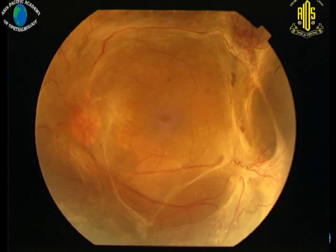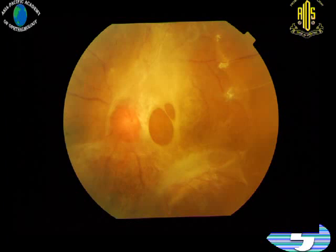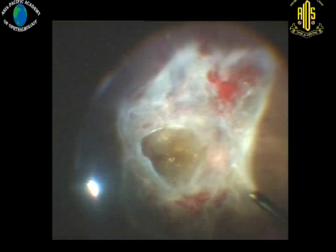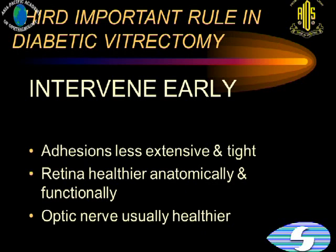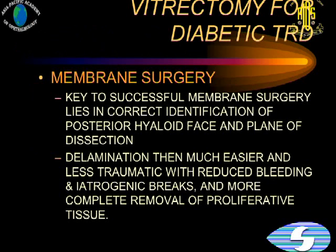These are the sort of cases that now come up for surgery. Here you see initially more neovascularization going into fibrosis, with active angry new vessels where we often use Avastin preoperatively to reduce the vascularity and then operate. This is the late fibrotic stage where you have a tabletop traction detachment. The other important principle is to intervene early, when adhesions are less extensive and tight, the retina is healthier anatomically and functionally, and the optic nerve is usually more healthy.